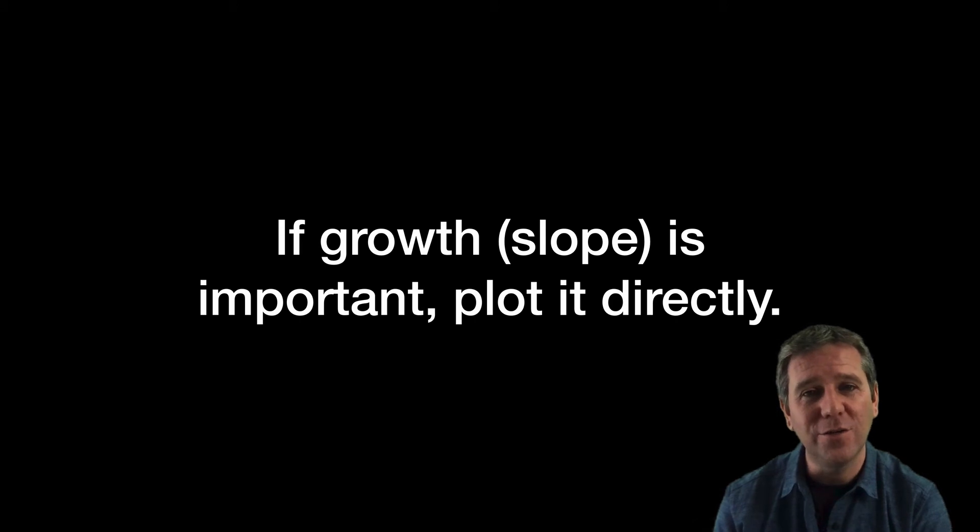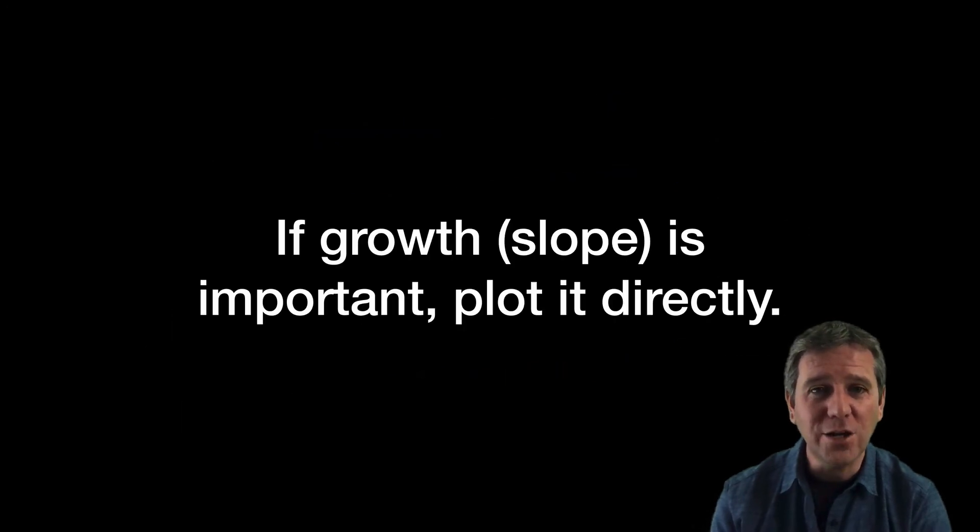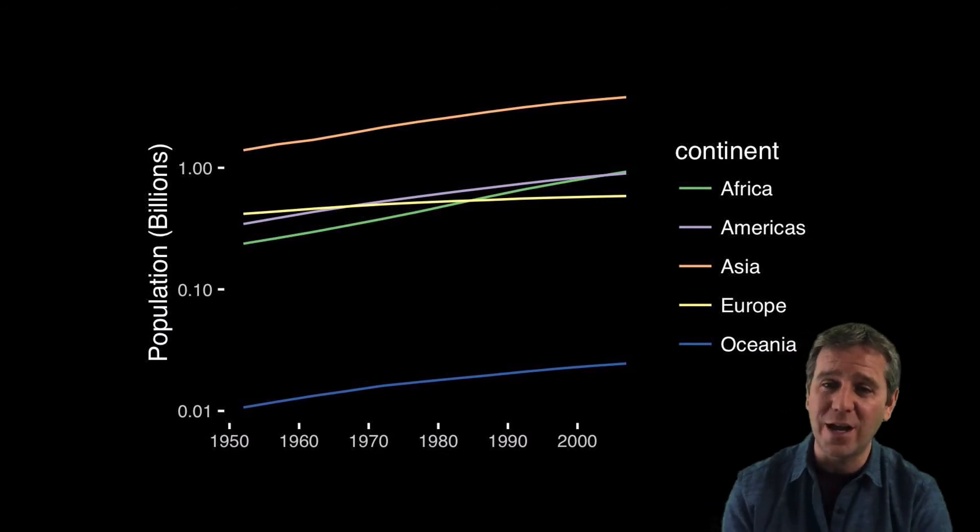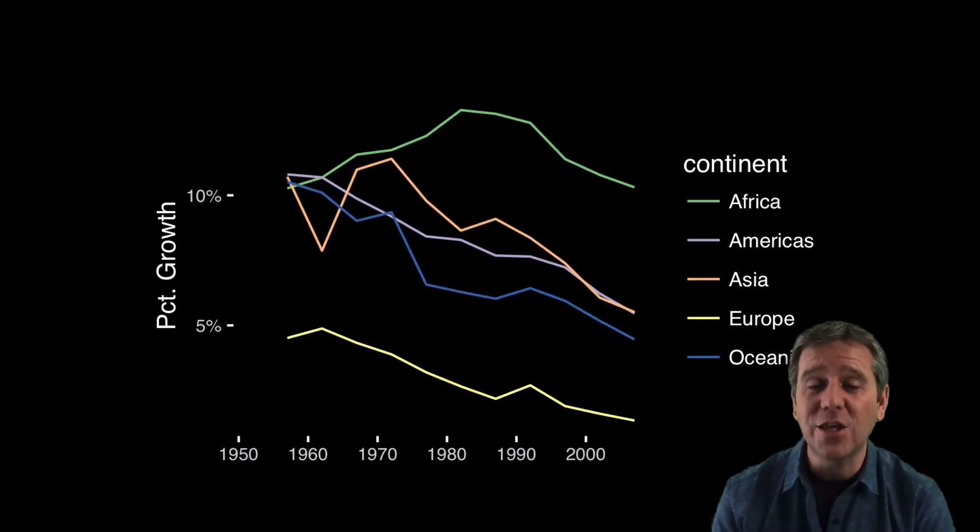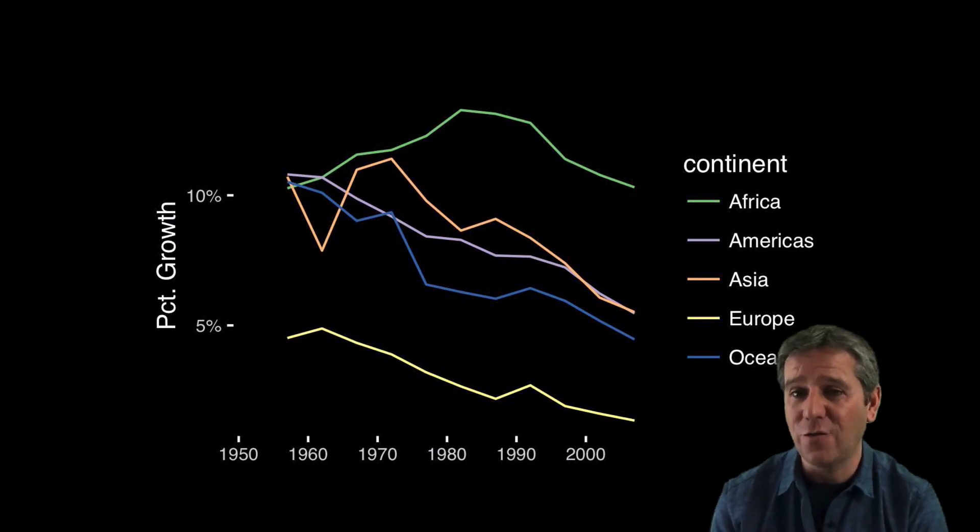They were discussing population growth and all the slopes were increasing. But what we're actually interested in is the slope—the growth itself. So why not plot that directly? If we plot the gradient of that line directly, things are actually very different. It's a different story. In all regions of the world, including Africa, population is not growing at an increasing rate—it's the opposite. It's decreasing. Folks are having smaller families everywhere than they used to.